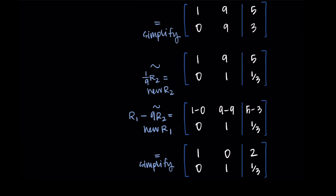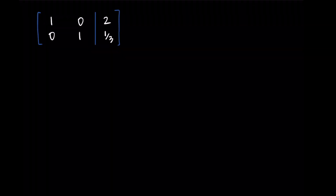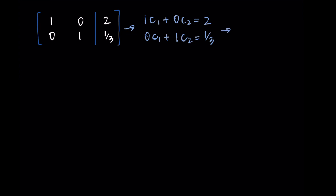From this reduced matrix, we get our solutions. The first row gives 1·c1 + 0·c2 = 2, and the second row gives 0·c1 + 1·c2 = 1/3. So our first weight c1 = 2 and the second weight c2 = 1/3. That's our final answer to the question of finding the weights that make the linear combination work.